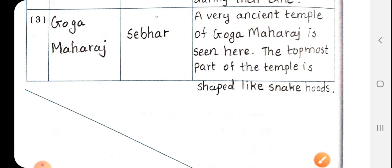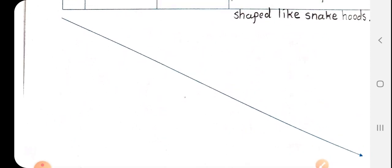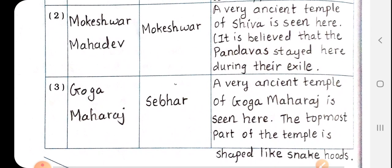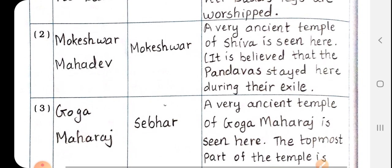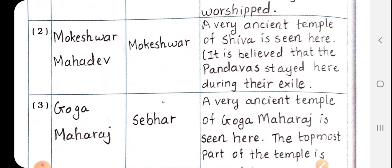So students, our Chapter number 25 is finished here. Our EBS syllabus is finished here. The question and answer is complete. Okay students, bye bye, thank you.